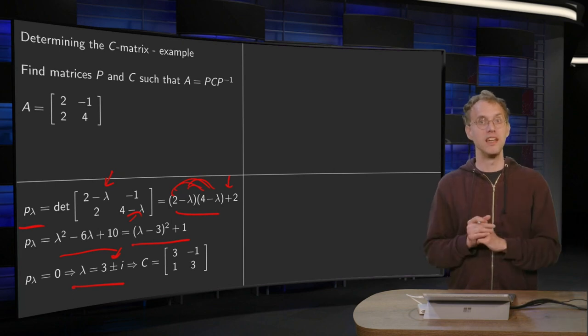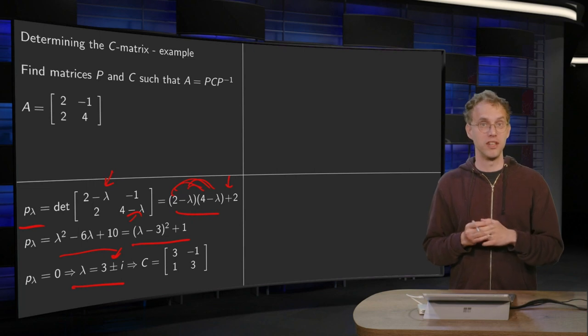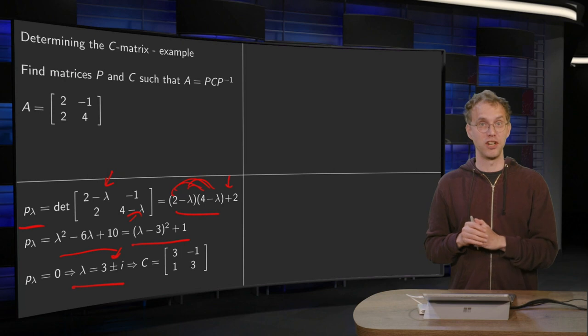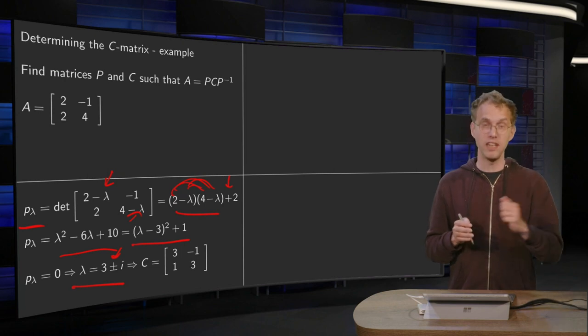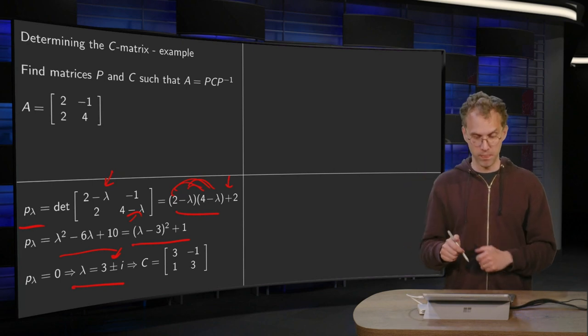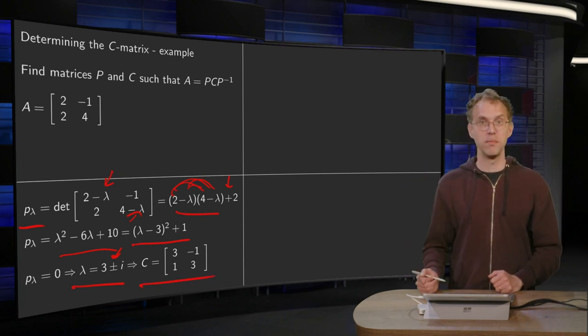Now that gives me immediately my C matrix, because according to the theorem, my C matrix becomes [a, -b; b, a], where a is the real part of λ, 3 in this case, and b is the imaginary part of λ, which is in this case 1. So there we have the C matrix.